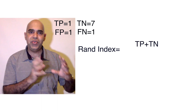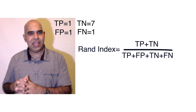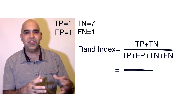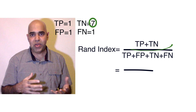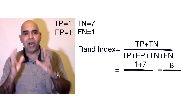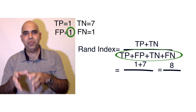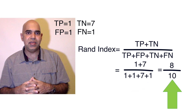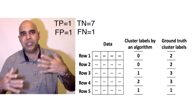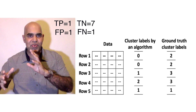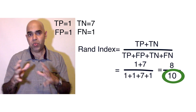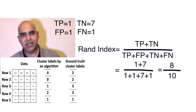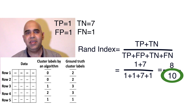The RAND index is the number of true pairs divided by the number of all pairs. True pairs are true positives plus true negatives, that is TP plus TN, which is 1 plus 7, equal to 8. The number of all pairs is TP plus FP plus TN plus FN, which is 1 plus 1 plus 7 plus 1, equal to 10. This is all the pairs for five rows: 4 plus 3 plus 2 plus 1 equals 10. So the RAND index is 8 divided by 10, which is 0.8.